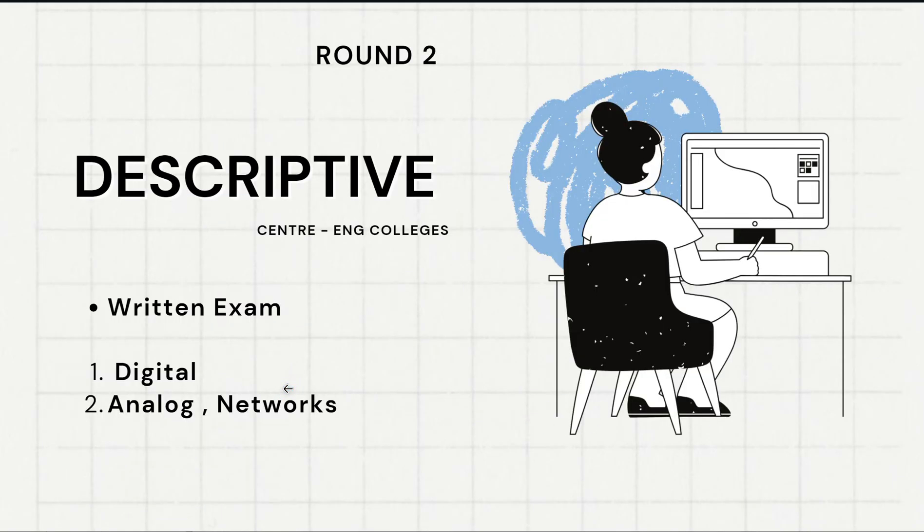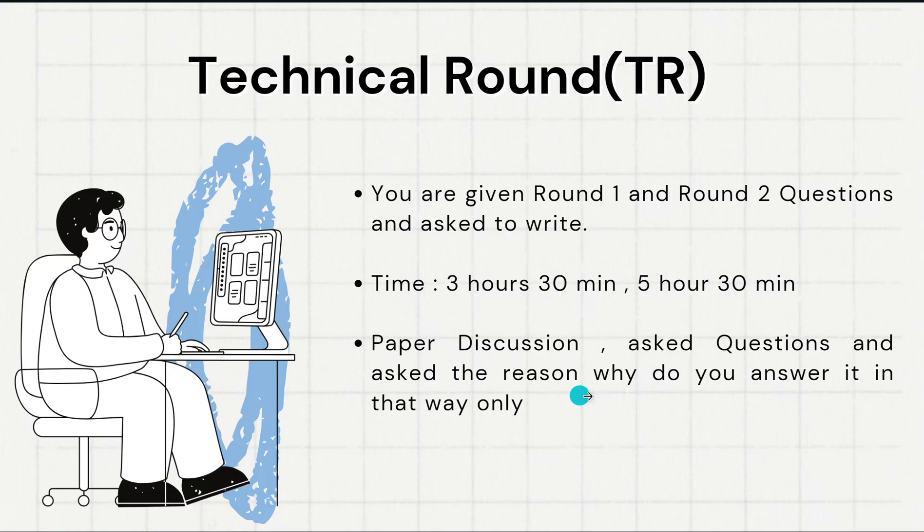Suppose you are asked about digital networks and analog networks in the descriptive round and you have attempted an answer for that. They will ask why you answered in that way only, what is the reason behind it. They may ask in that way. It is just an assumption. They might be asking like that. Be prepared for that.